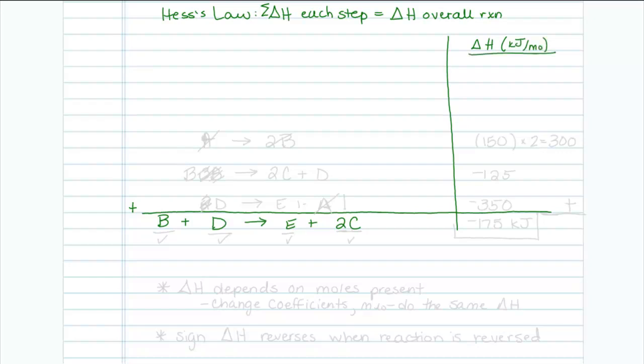So what Hess's Law says, if I figure out the delta H for each step, then I can add them up to get the overall delta H. And we may have to manipulate and change the delta H for each reaction.